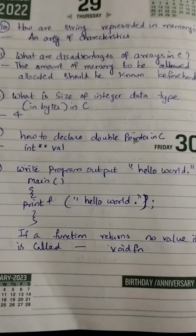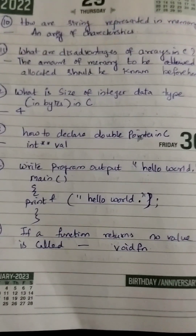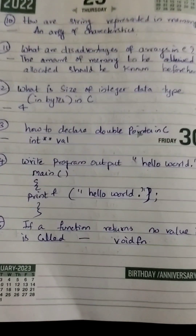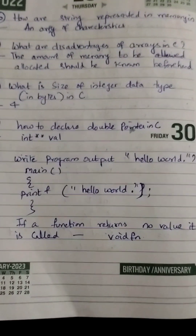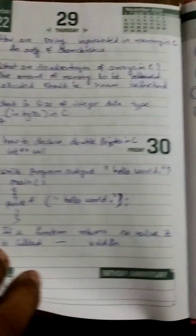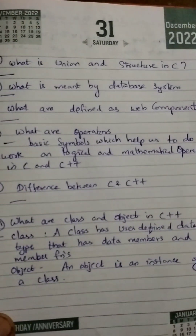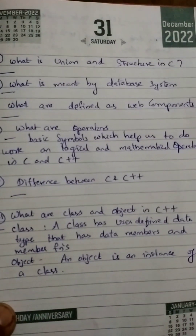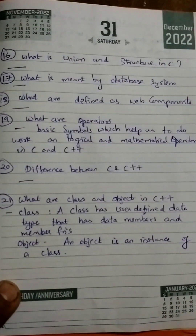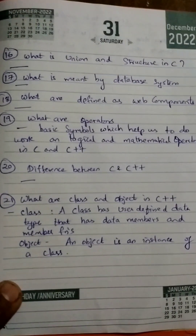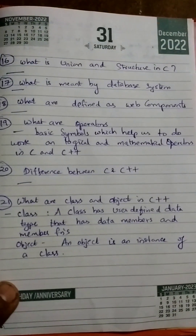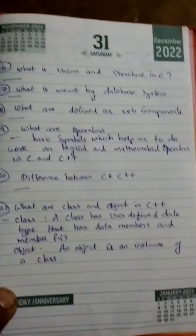'How do you declare a double pointer in C?' — for example, int double star. There is a program to write the output of Hello World. 'If a function returns no value, what is it called?' — it is called a void function. 'What is union and structure in C?' — find the answer. 'What are operators?' — basic symbols that help perform logical and mathematical operations in C and C++.